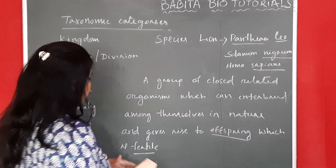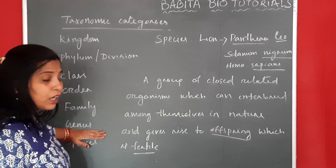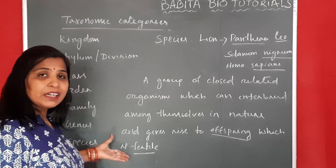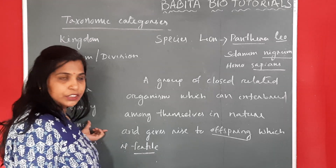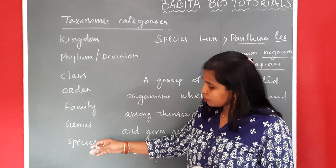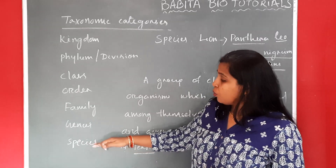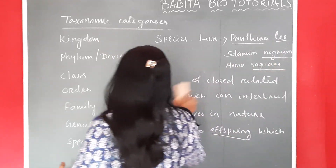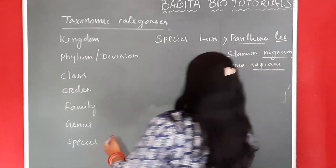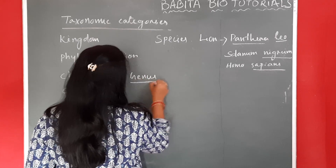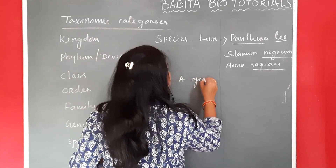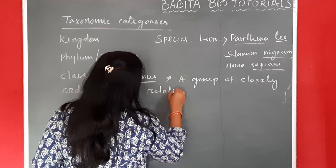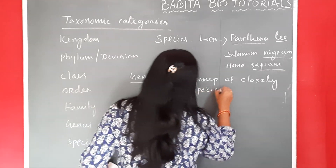Now, we will go for the genus. What is genus? Genus is a group of closely related species. A group of species which have similar characters that present one genus. More closely shared characters are similar in the case of species. When you reach to the kingdom, you will find less closely related characters. A group of closely related species that belong to one genus.